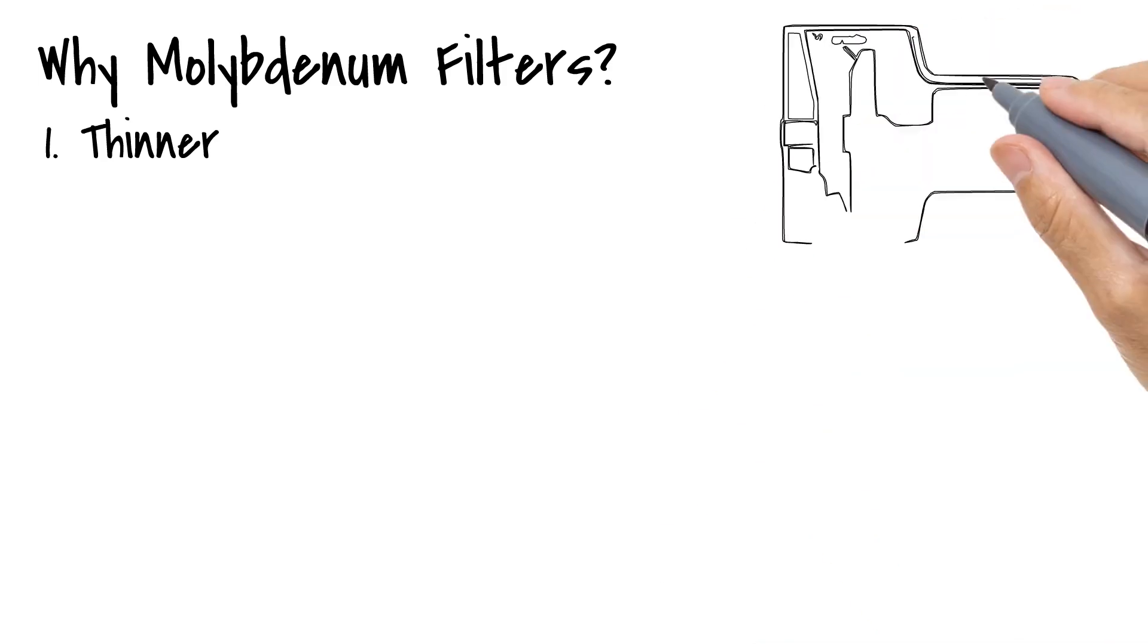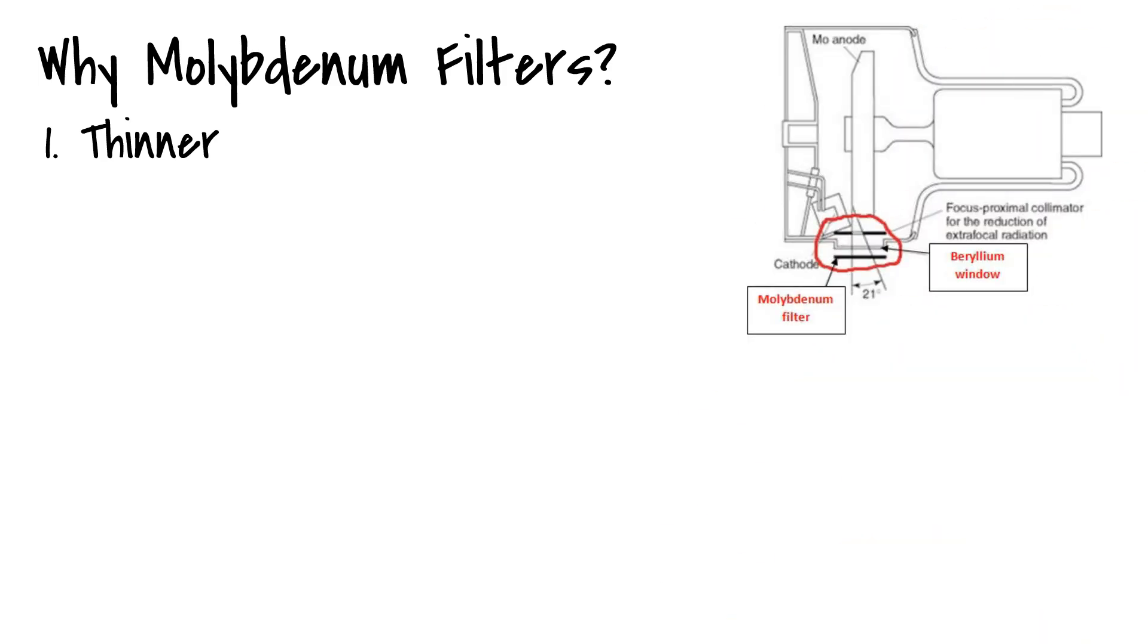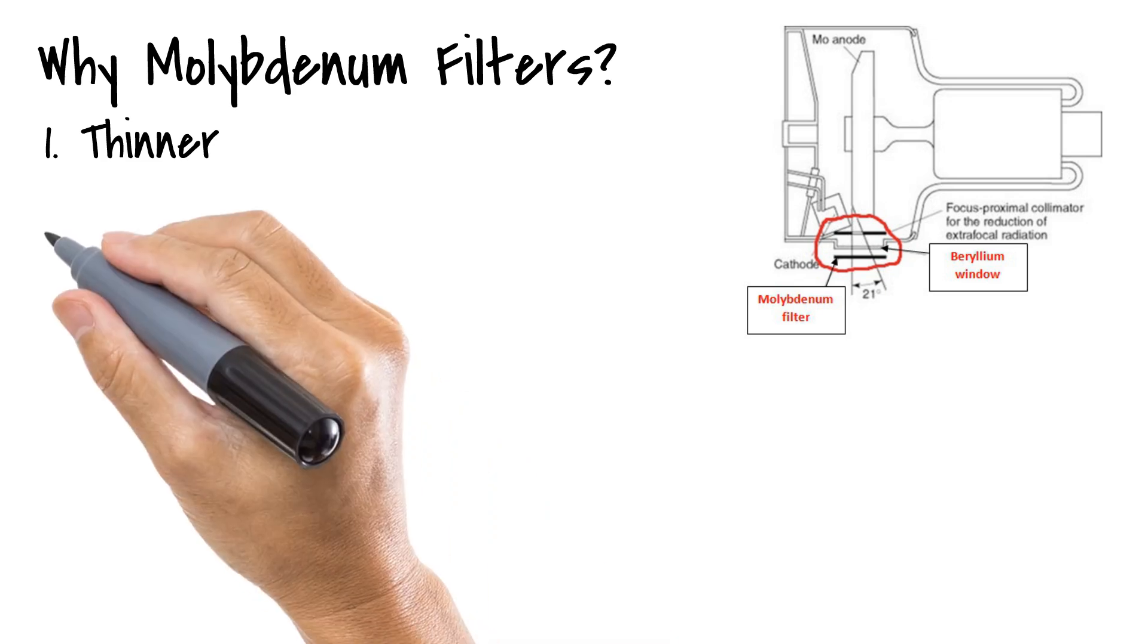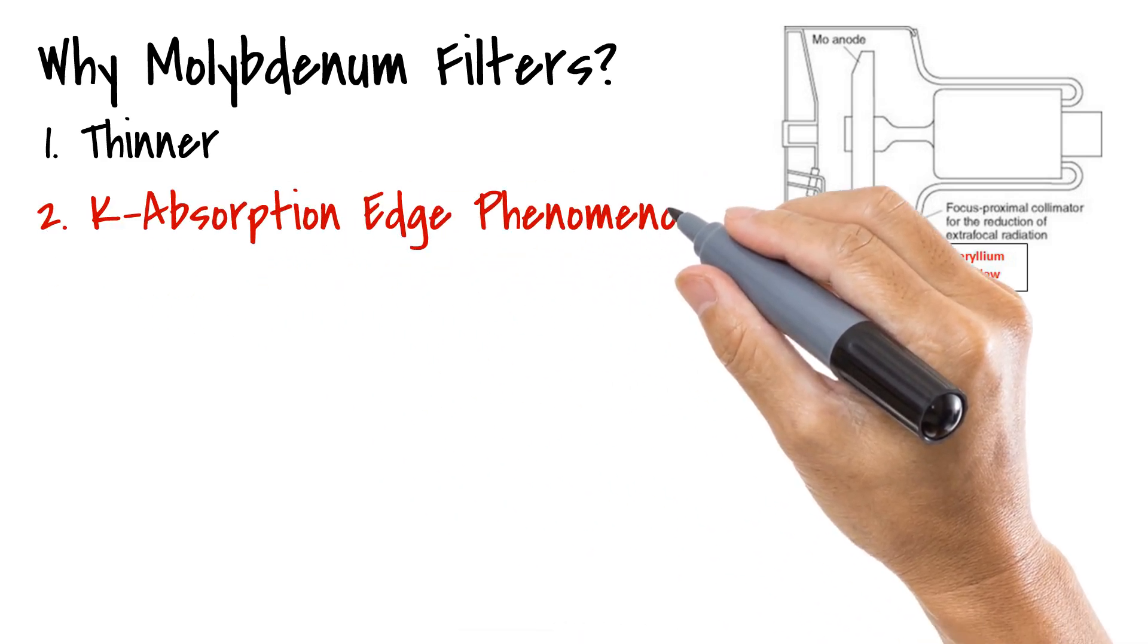In addition to being less dense than aluminium filters, there is another reason why molybdenum is used. We already mentioned that the anode target in a mammography tube is made of molybdenum. What we haven't mentioned is that useful X-ray photons produced by the molybdenum anode target will have energy that is slightly below the binding energy of molybdenum. This forms the basis of the second reason why we use filters that are also made of molybdenum.